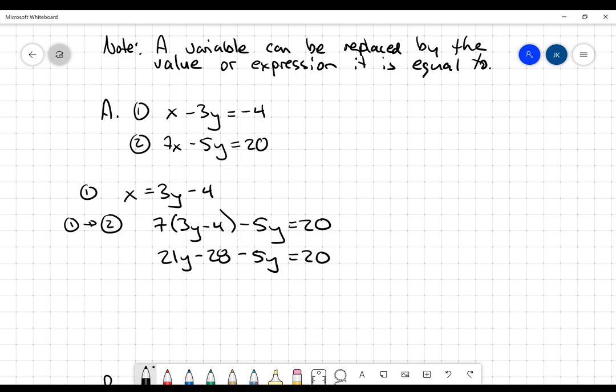Putting that together, I will get 16y and I'll bring the 28 over to get 48. And so y is going to equal 3. Once I know that, I have a nice expression for x here from equation one. I'll substitute this value and I'll get x is equal to 3 times 3 minus 4. So we can see that x is equal to 5.